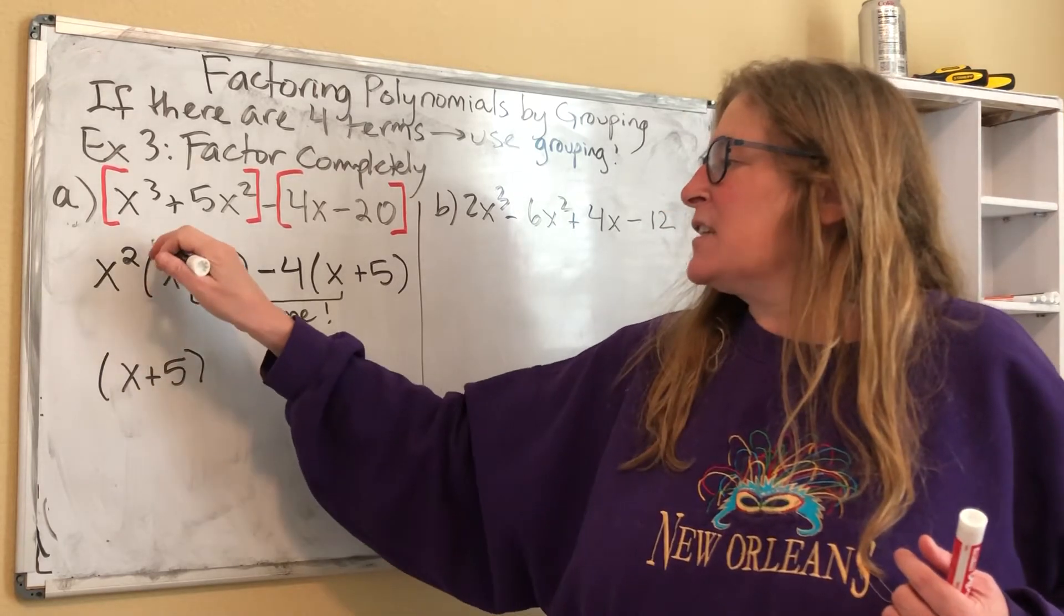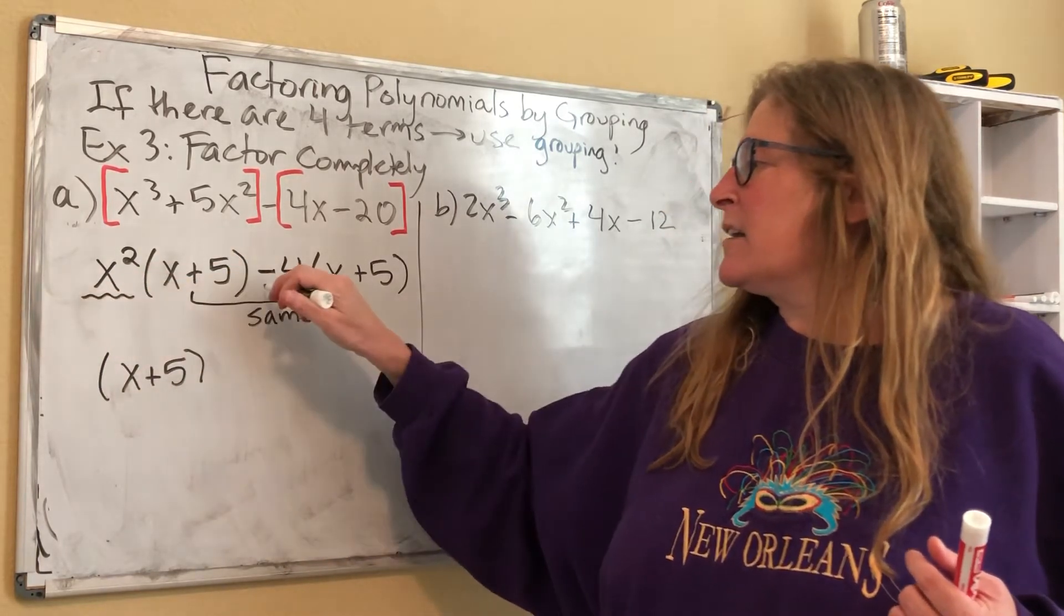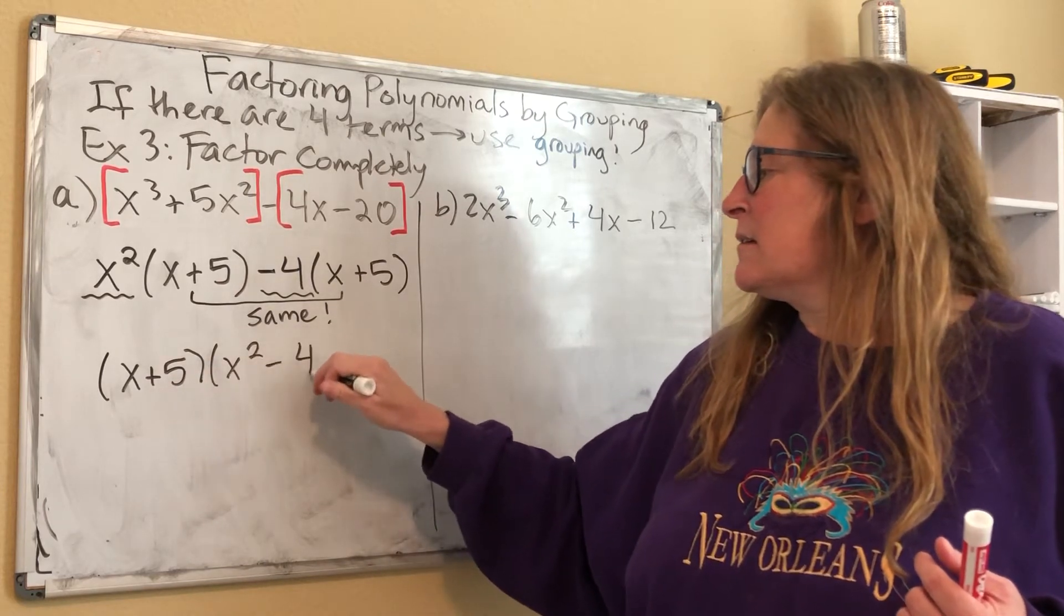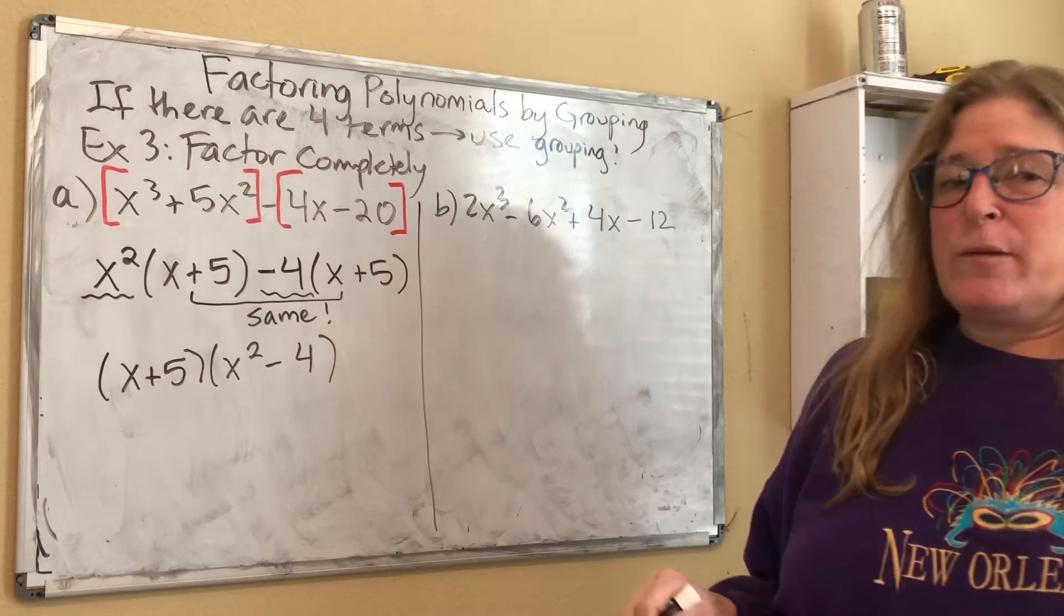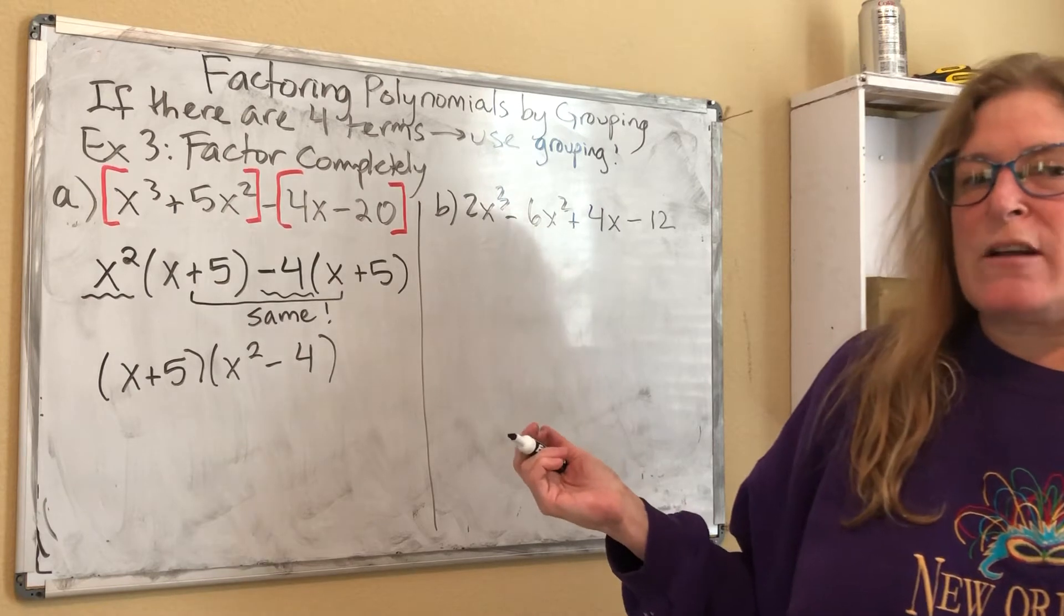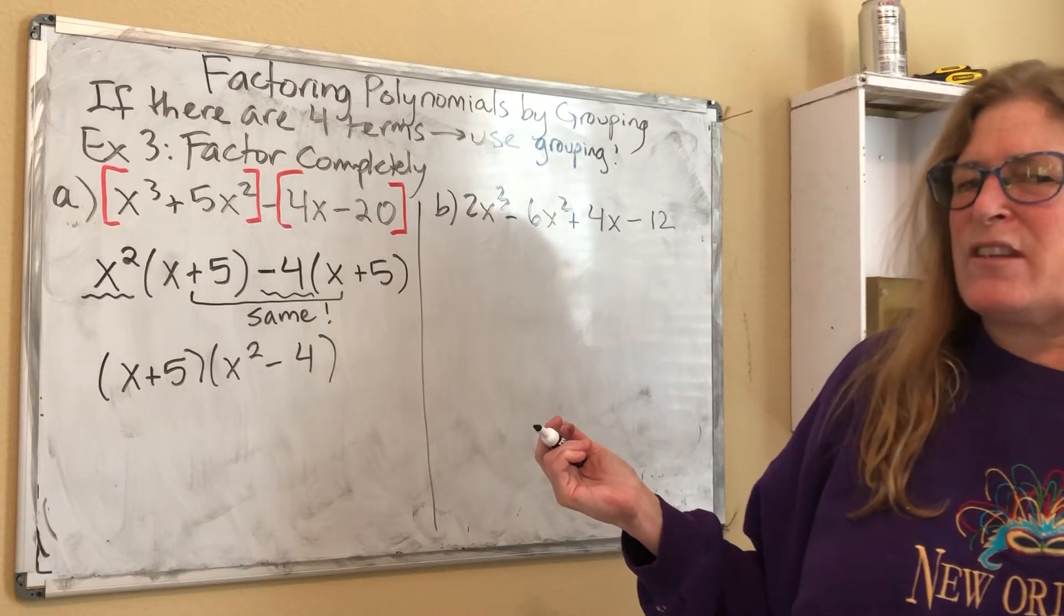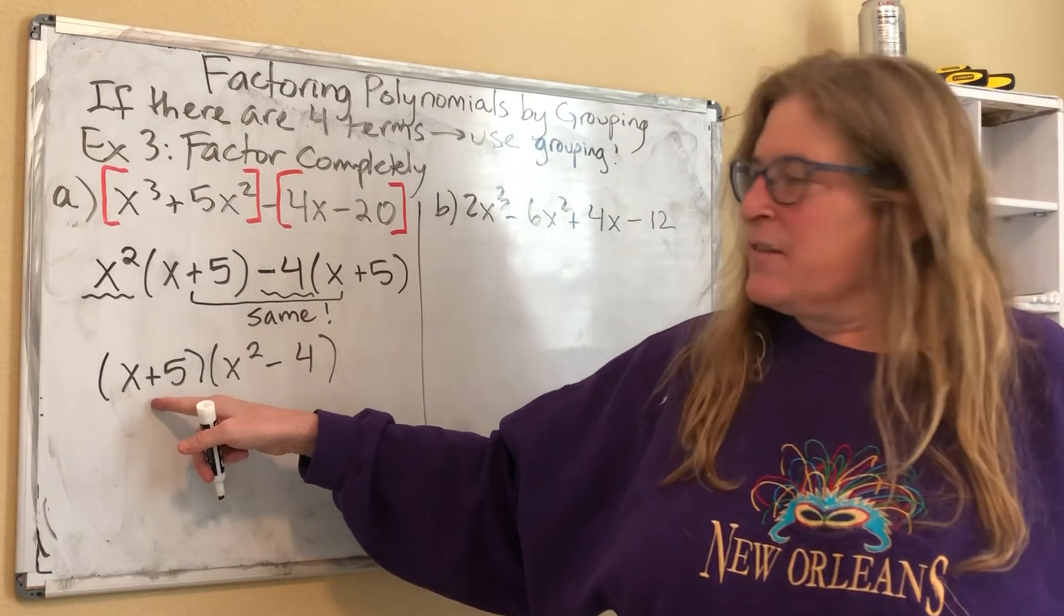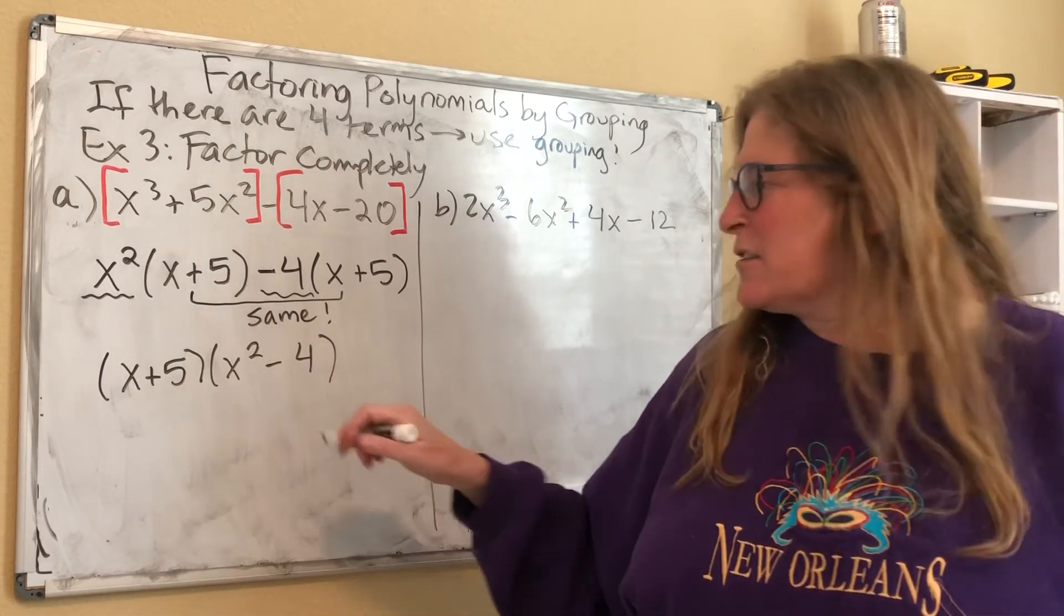And then what's going to be left is this x squared minus four. Now the polynomial says, doc, I feel so much better. Thank you. But I'm really still not feeling 100%. So I'm going to look, I'm going to say, okay, x plus five, there's nothing I can factor there. But look at x squared minus four.